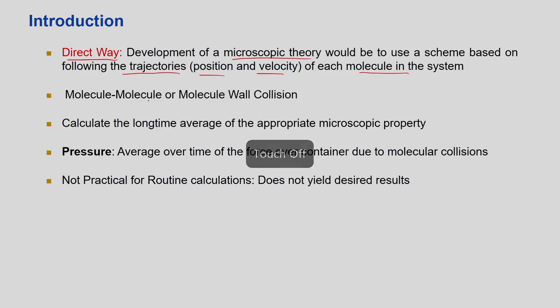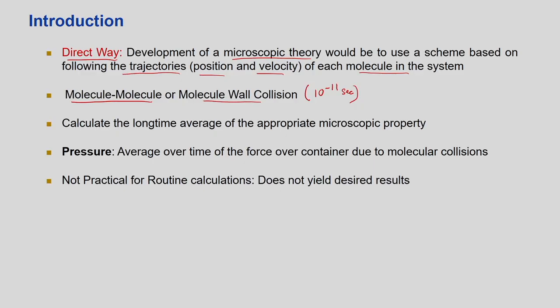But we are talking about a large number of molecules with two types of collisions: molecule-molecule and molecule-wall. The time between these collisions is on the order of 10⁻¹¹ seconds. With so many molecules, you cannot use even molecular dynamics for more than 100–300 molecules. That is why we take a long-time average of the appropriate microscopic property.